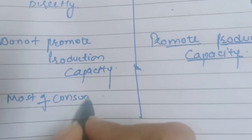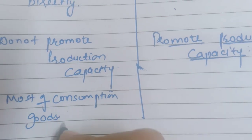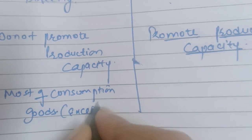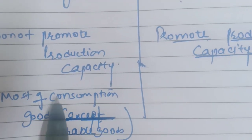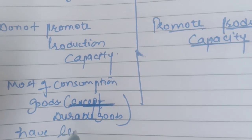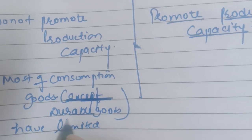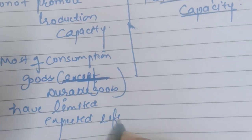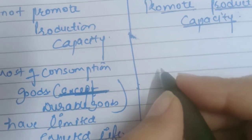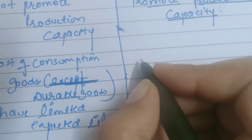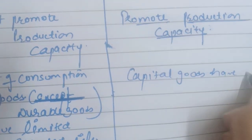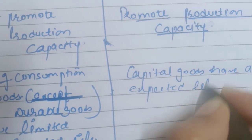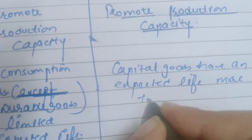Most consumption goods, except durable goods like TV, have a limited expected life. On the other hand, capital goods have an expected life of more than one year.